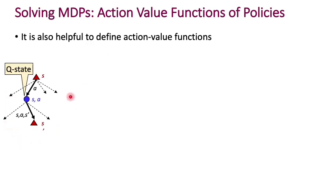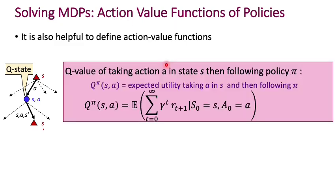You can think of this in terms of the diagram we drew earlier — we're computing the value function of the q-states, the blue circles that correspond to an imaginary state that exists after having executed a particular action a from state s. We call them q-states, and accordingly we call these action value functions q-functions. More formally, the q-value of taking action a in state s and then following policy pi is the expected utility of taking action a in s and then following policy pi. It's a function of the policy, the state, and also the action executed.